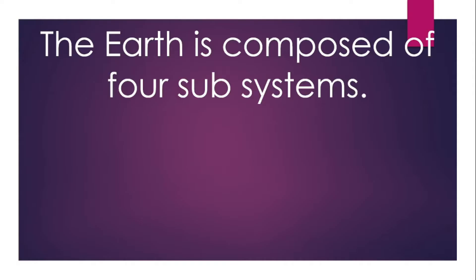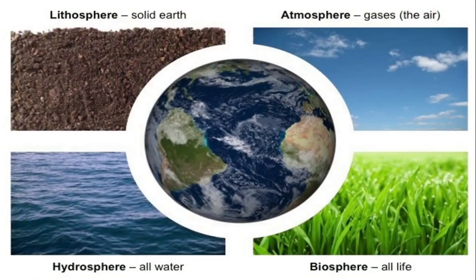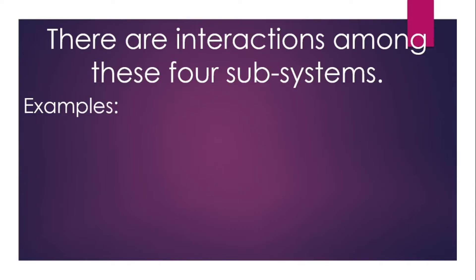There are four subsystems of which the earth is composed: lithosphere — solid earth; atmosphere — gases; hydrosphere — all water; biosphere — all life. Now it's time to look at interactions among these four subsystems.